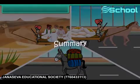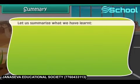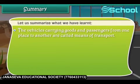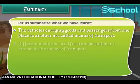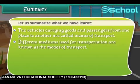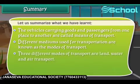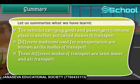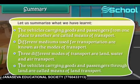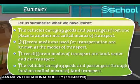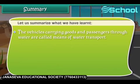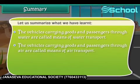Let us summarize what we have learned. The vehicles carrying goods and passengers from one place to another are called means of transport. Different mediums used for transportation are known as the modes of transport. The three different modes of transport are land, water and air transport. The vehicles carrying goods and passengers through land, water, and air are called means of land, water, and air transport respectively.